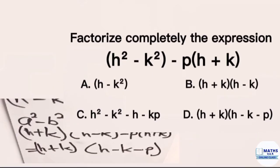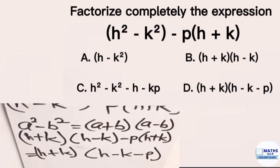So if you check the questions given to you from the options, which one do you think is the correct answer? The answer is D, which is h plus k multiplying h minus k minus p.